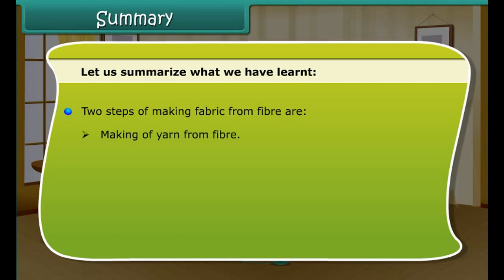Summary: Fabric is made up of yarns arranged together. Thin strands of yarn are made up of still thinner strands called fibers. Fibers are of two types: natural fibers and artificial fibers. Cotton and jute fibers are obtained from cotton and jute plants respectively. The two steps of making fabric from fiber are: first, making yarn from fiber, and second, making fabric from yarn.